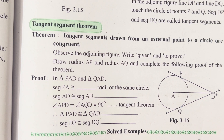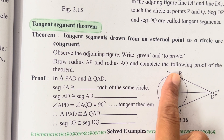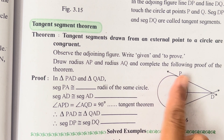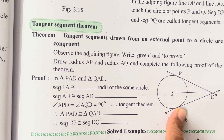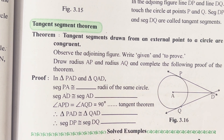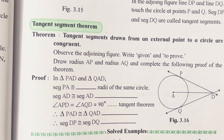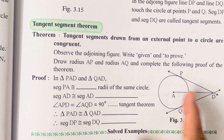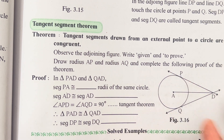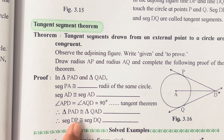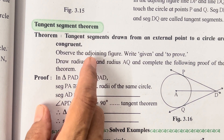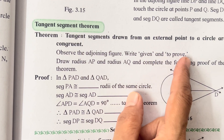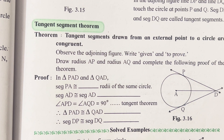It is very easy to write given and prove. PD is the tangent, DQ is the tangent, and A is the center of the circle — that is what is given. What we have to prove is that PD and DQ are congruent. I have already told you what to write in given and prove, so you can write it.